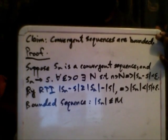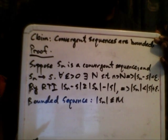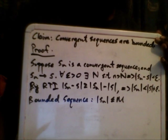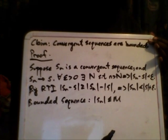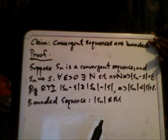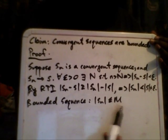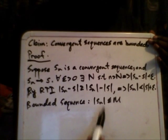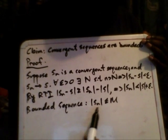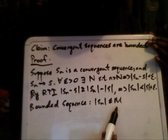In the formal definition, you have the set {Sₙ} where the indices n are elements of the natural numbers, and the entire sequence satisfies |Sₙ| ≤ M. So algebraically, the absolute value of Sₙ is less than or equal to a constant M.